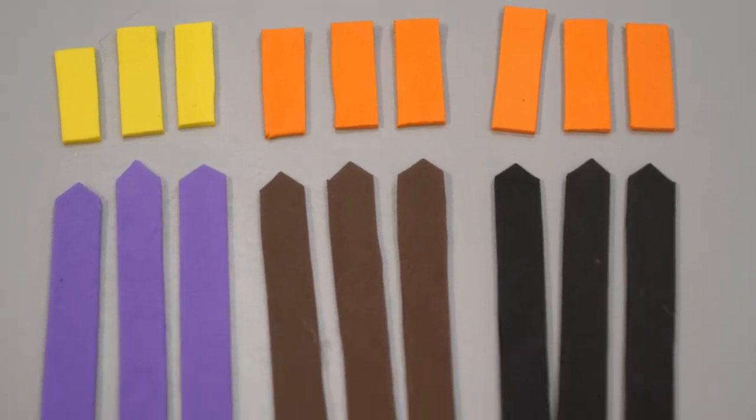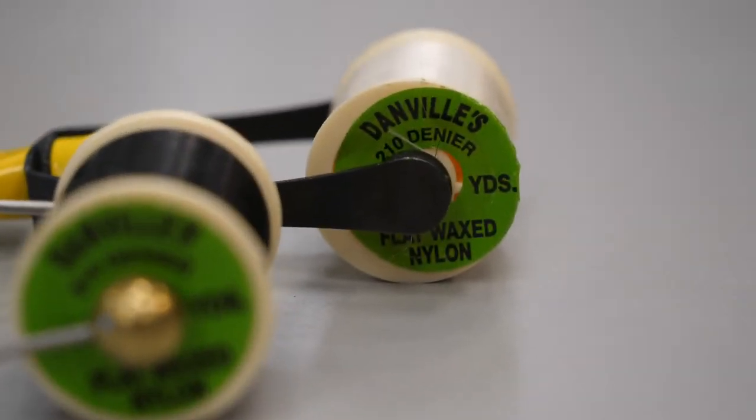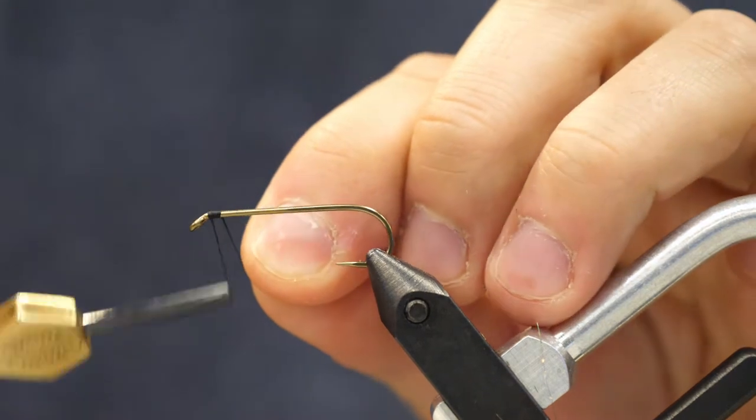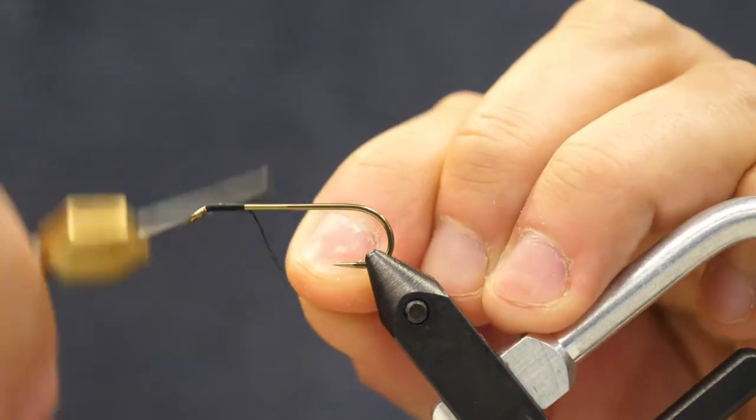I like to pre-cut all the foam that I'm going to use for these flies, and I'm using flat wax nylon, especially the early part where we wrap on our thread and then secure down the foam. You want a nice, strong thread. Flat wax nylon works so great.